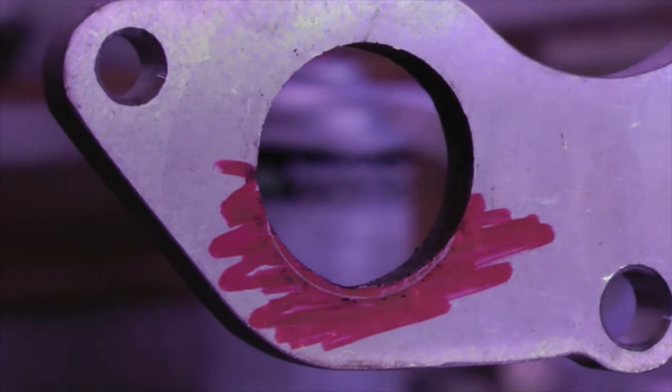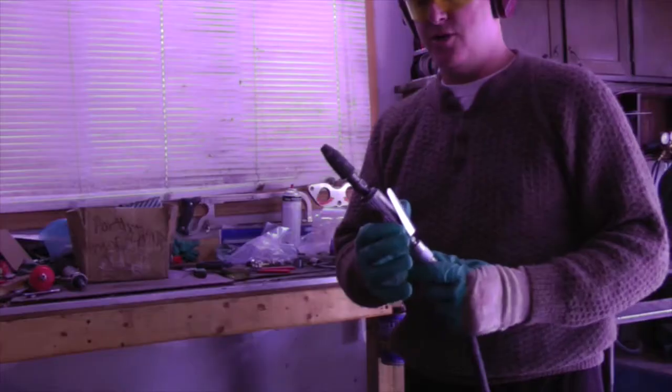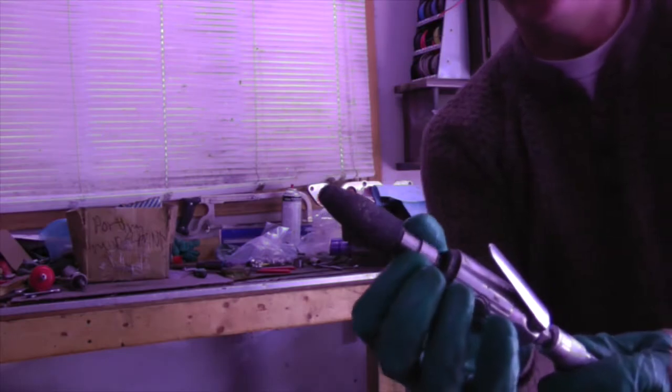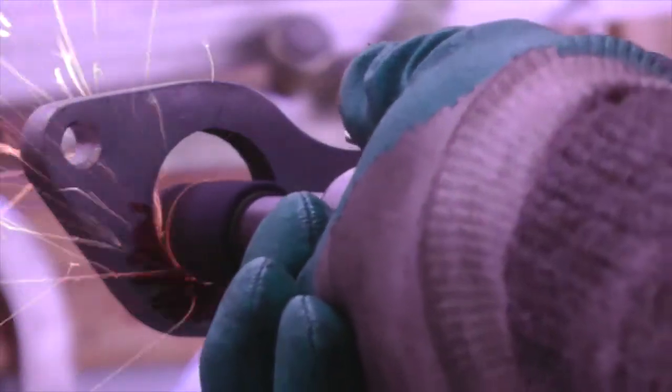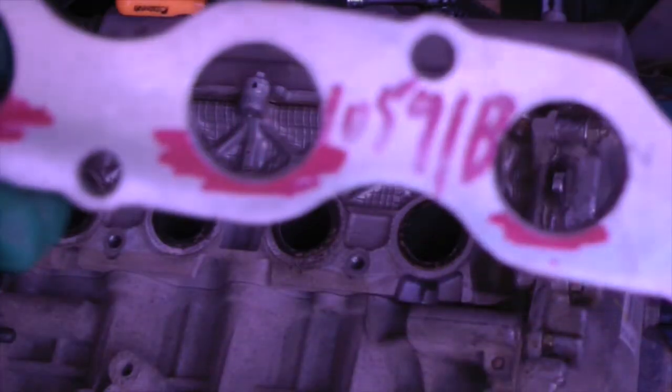Here's a close-up of the scribe marks. Next thing I'm going to do is use safety glasses, ear protection, a high-speed die grinder with a stone that's designed for cutting cast iron. And I'm going to match the flange to the ports on the head.